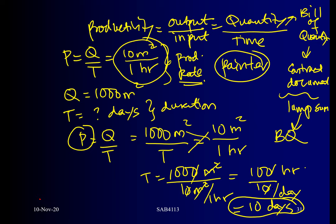So the painting work as an activity — we can input 10 days into Microsoft Project. How do you get 10 days? Based on calculation, not assumption. There must be a basis. That's why during construction, in order to monitor and control activities, after the planning process you implement the work. During implementation, the next process is monitoring and control, one of which is monitoring the productivity of your workforce or equipment.